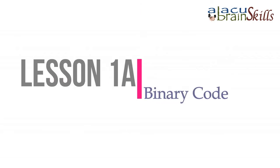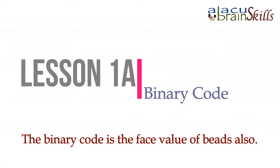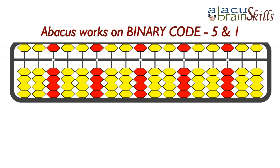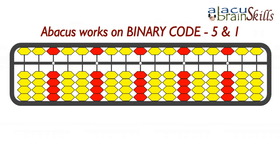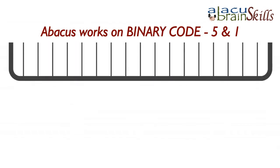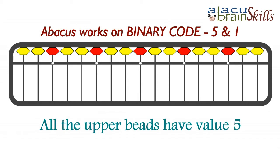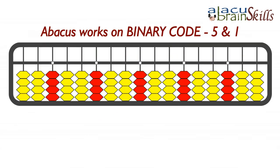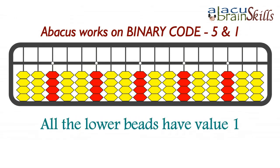Lesson one A: Binary code. The binary code is the face value of beads. Abacus works on binary code: five and one. All the upper beads have value five. All the lower beads have value one.